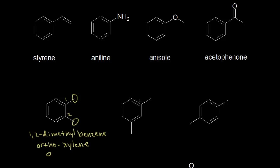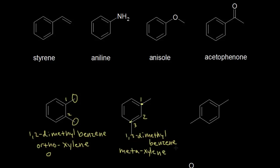This next molecule is also xylene, but the methyl groups are in slightly different positions — this would be 1,3-dimethylbenzene, an acceptable IUPAC name. When two groups are one carbon apart from each other on the ring, that relationship is called meta in organic chemistry. So this molecule is meta-xylene, or m-xylene. The third xylene has methyl groups at carbons 1 and 4, so it can be called 1,4-dimethylbenzene.